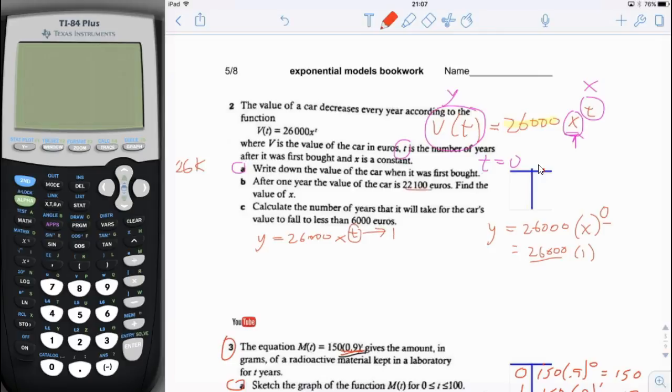22,100 euros. Where does that go? Well, remember, this value here to the left is the value of the car at any time t. In this case, time equals 1. And they tell us it's 22,100, so we can fill that in too. 22,100 equals 26,000 x to the t. x to the t is x to the 1. What's x to the 1? Anything to the 1 is itself. So, x to the 1 is x. So now I have 22,100 equals 26,000 times x. How do I find out what x is? I divide both sides by 26,000.